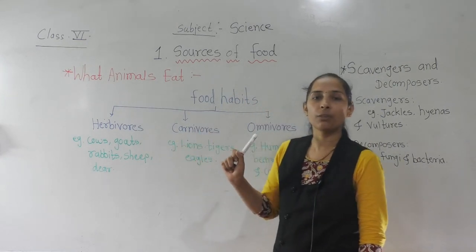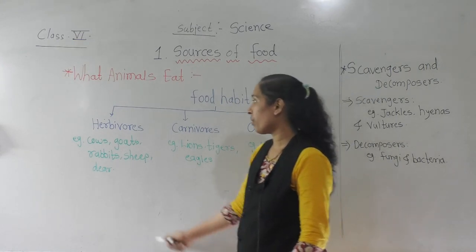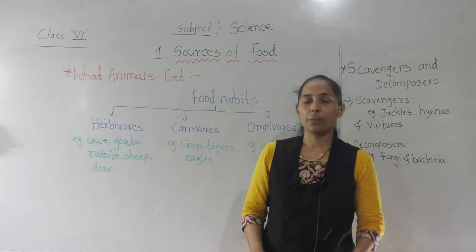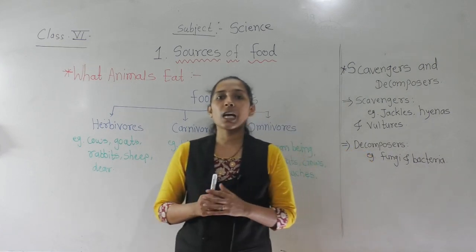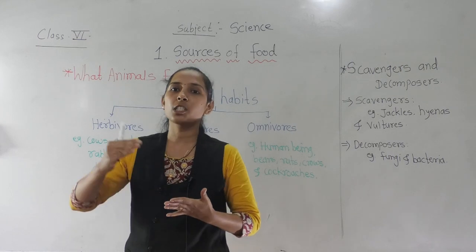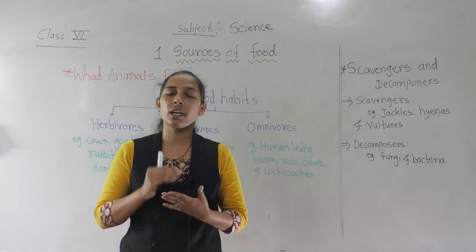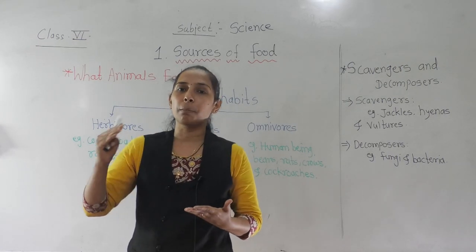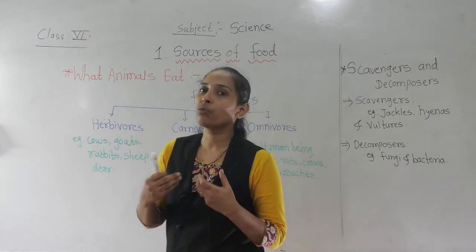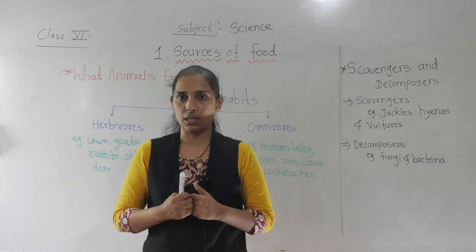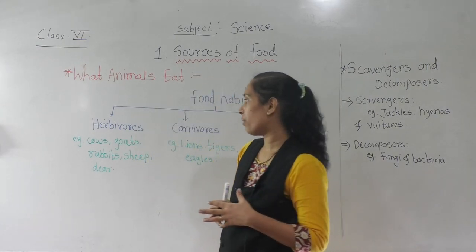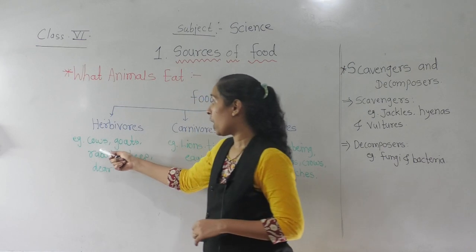First, we will discuss herbivores. Herbivores are animals that eat plants or plant products — meaning animals that eat only green plants are called herbivores. There are many examples of herbivore animals, for example: cows,